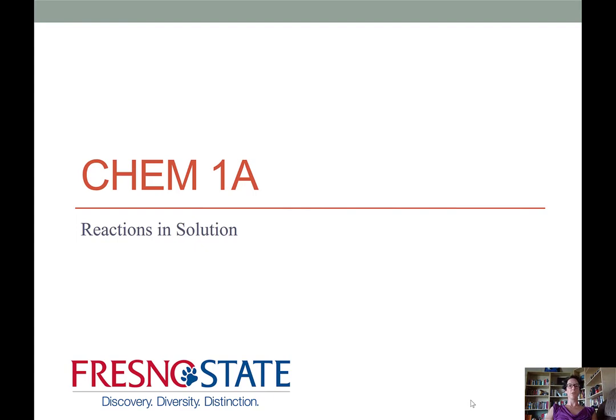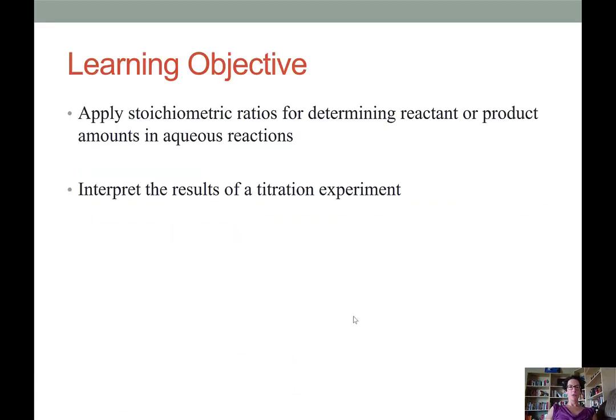This Chem 1A lecture video pertains to the nature and calculations involved in reactions in solution. Our learning objectives are twofold. We will look at how to apply stoichiometric ratios for determining the reactant or product amounts when dealing with an aqueous reaction, and also use that stoichiometry to interpret the results of a specific type of experiment called a titration.